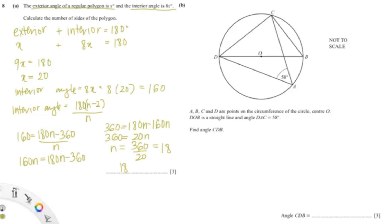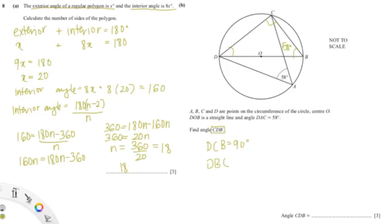So our number of sides is 18. The next question asks us to find angle CDB. We can see this is a triangle in a semicircle, so we know angle DCB equals 90 degrees. Using the circle theorem shown, angle DBC is 58 degrees. Therefore, angle CDB = 180 minus 90 minus 58, giving us an answer of 32 degrees.